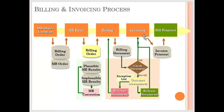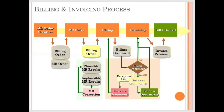Once the invoicing process is done, you can go for the printing process. Similarly, when getting the meter reading order, if the meter reading is more or less than expected, you need to check whether it is plausible or implausible. If implausible, you cannot do billing — you need to do a meter reading correction. Once you do the meter reading correction, it becomes a plausible meter reading, and then you can push that into the system for the billing process.